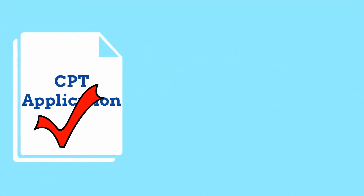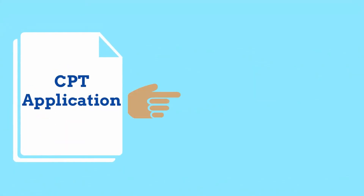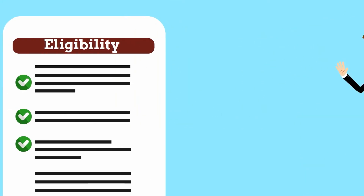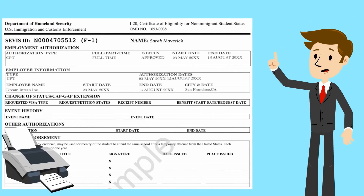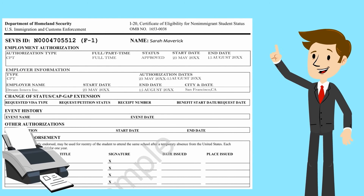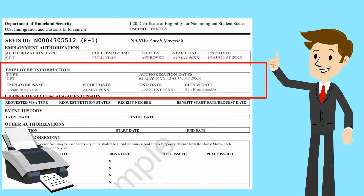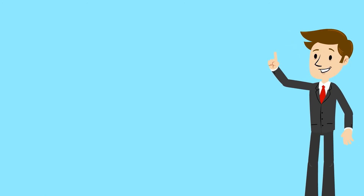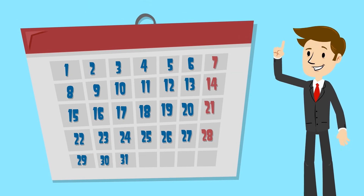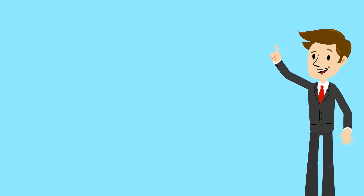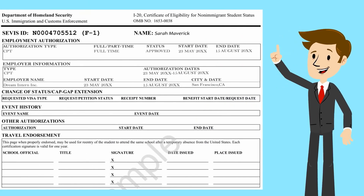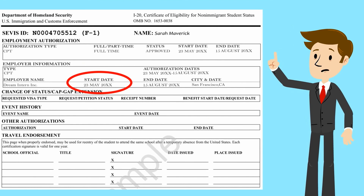That completes your application. When you submit your application to OIE, an advisor will determine your eligibility and issue you a brand new I-20 authorizing the employment for the specified dates and employer. This process could take up to a few weeks. When you receive your new I-20, you may begin working on the start date listed on page two.